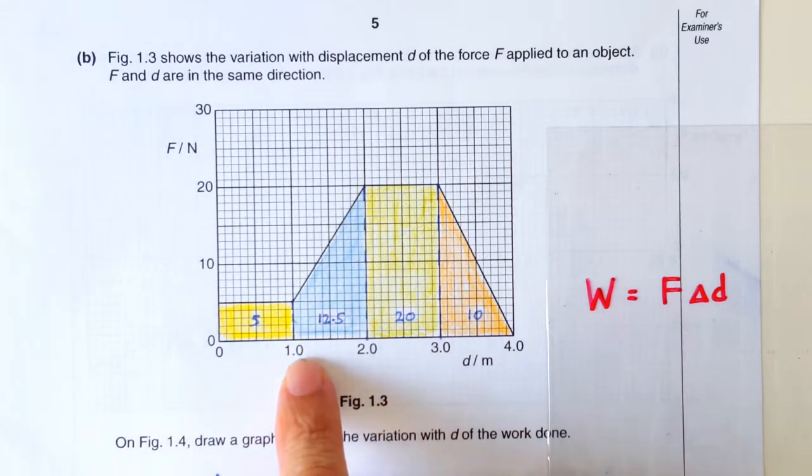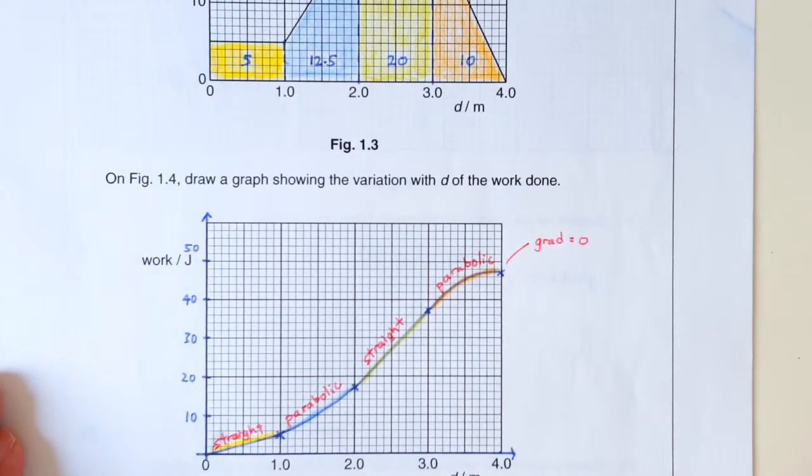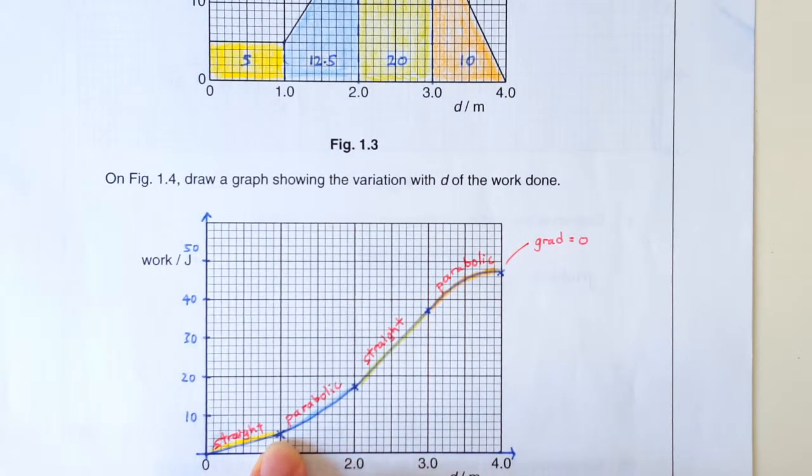That means at a distance of 1 meter, the amount of work done by the force should be just 5 joules. So we have one data point here, 5 joules.